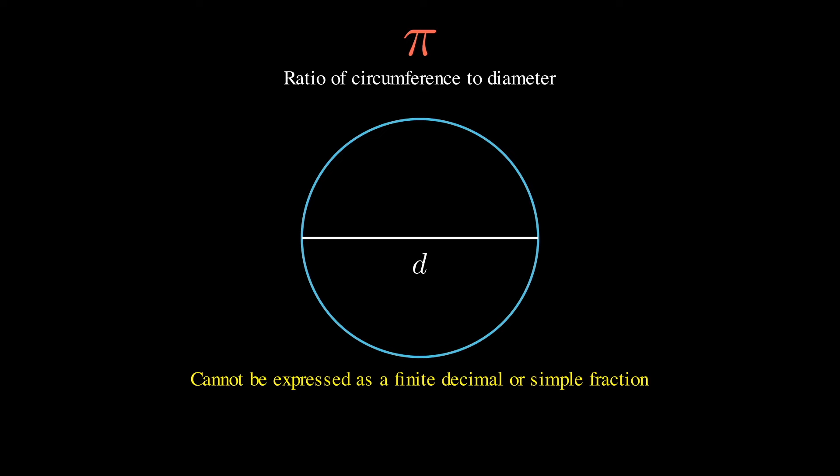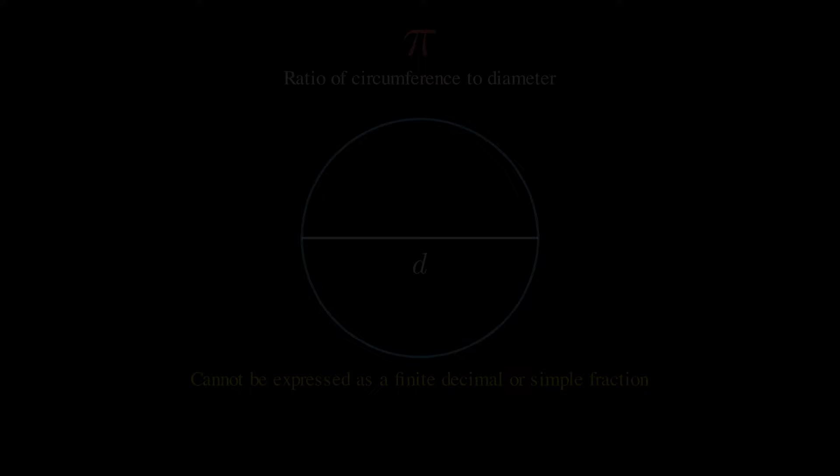The most famous examples of irrational numbers are probably things like pi and square root of two. Pi, of course, is the ratio of the circle's circumference to its diameter, yet paradoxically, it can't be expressed as a finite decimal or simple fraction.